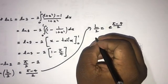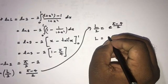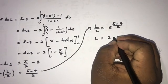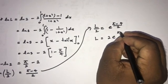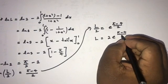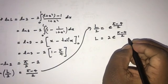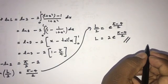So L = 2 · e^((π−4)/2). This is the final answer. If you like this video, please subscribe to the channel. Thank you for watching.